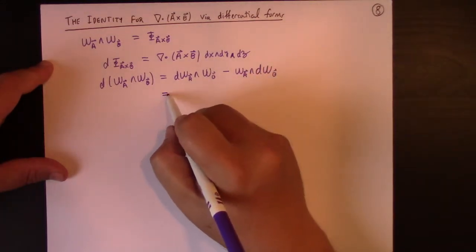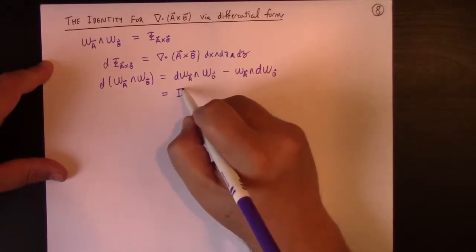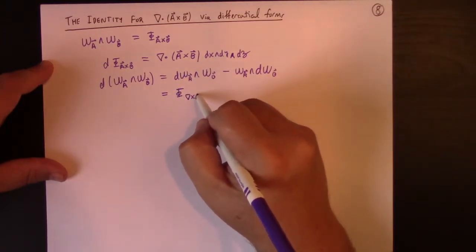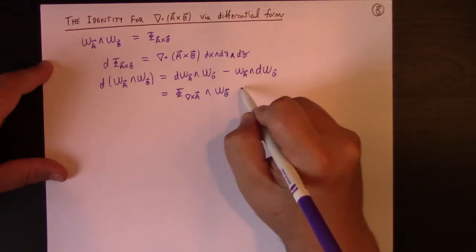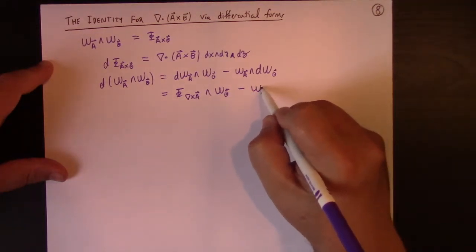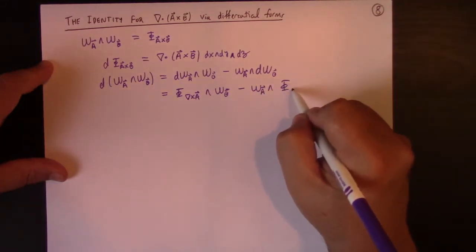But hey, we also know that this is the flux form of the curl of A wedge with omega B minus omega A wedge with the flux of the curl of B.